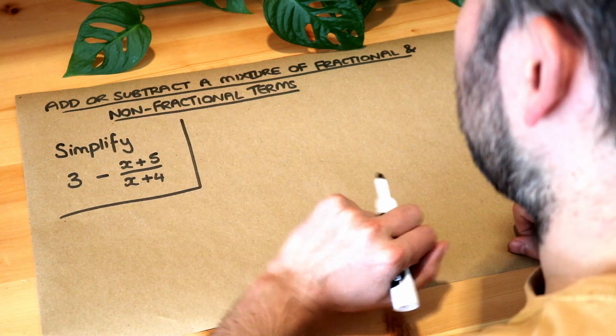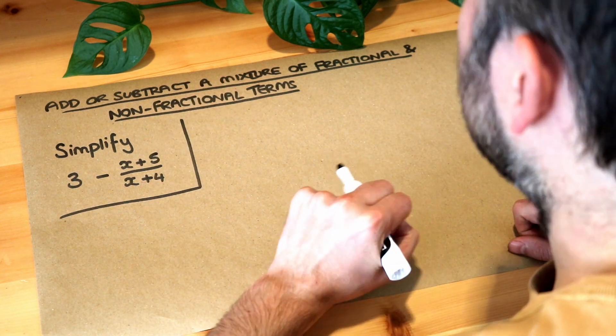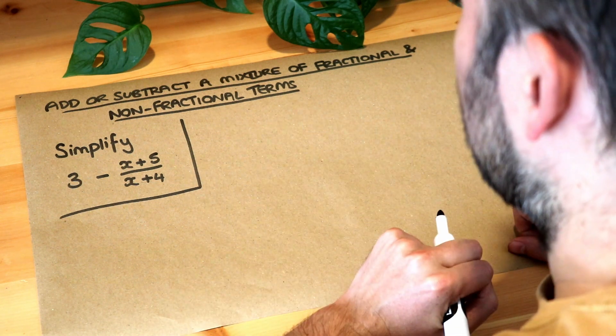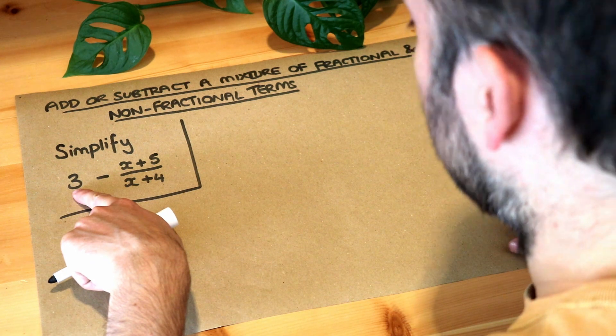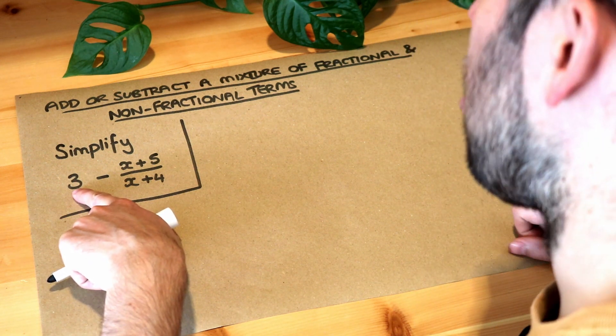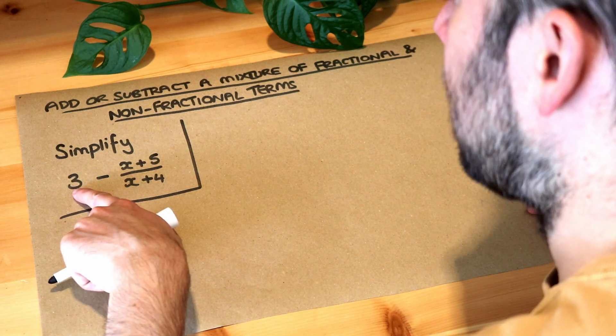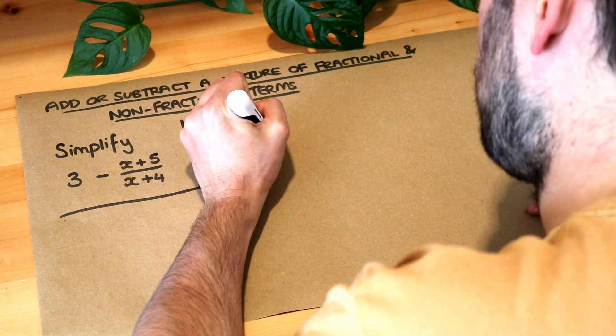Now when you have a mixture of fractional and non-fractional terms, all you need to do is just make sure everything is a fraction. So if you have three, that's not a fraction, the way you can turn it into a fraction is to just treat it as three over one.